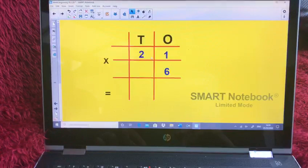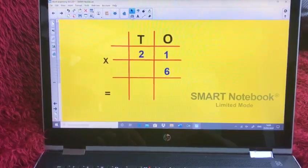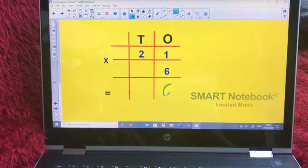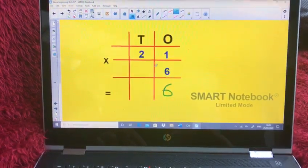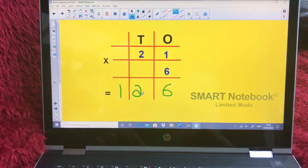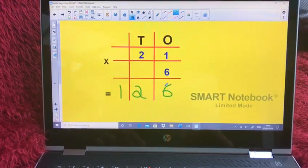Now, here's our first example. So as always, we start with the ones column. One times six is six and two times six is 12. We put it in like this. The answer to 21 times six is 126.